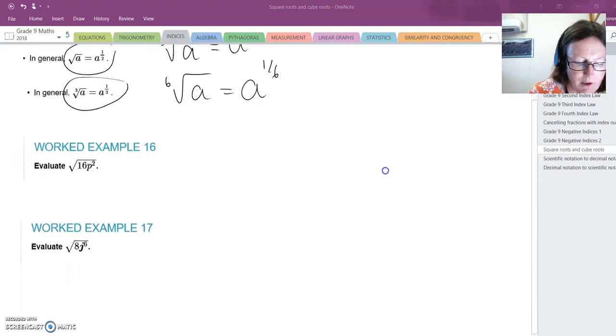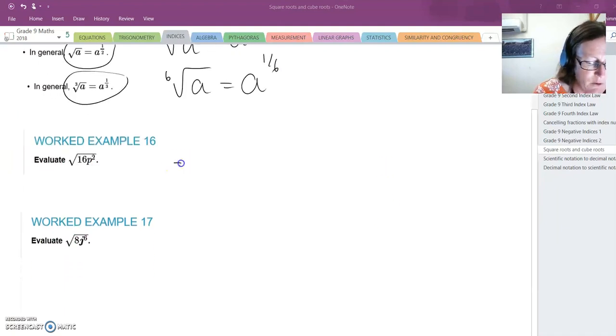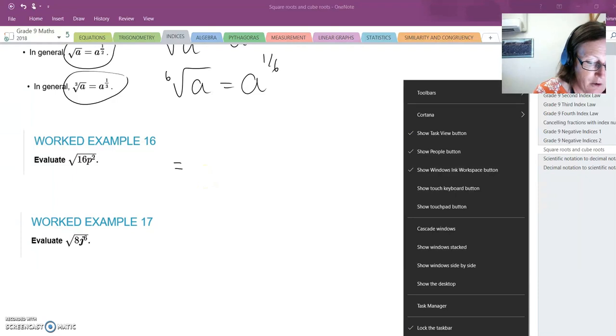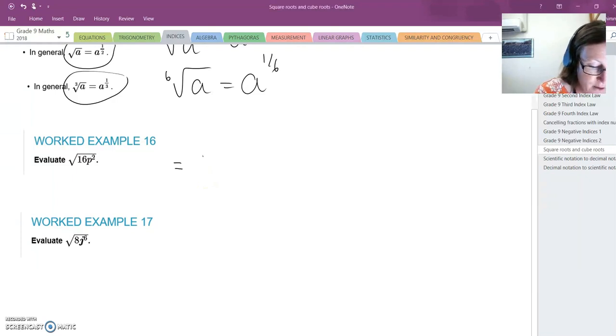Let's look at how we can apply this rule. If I've got the square root of 16p², I could write this as the square root of 16 times the square root of p².